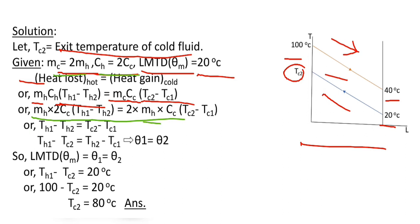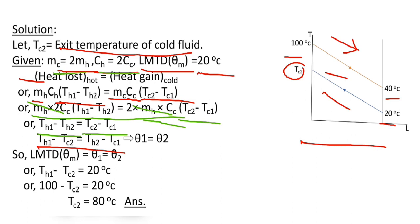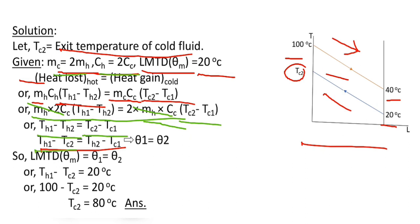Here, 2·m_hot × Cp_cold is common on both sides, so it cancels out. From this we get that the temperature difference of the hot fluid equals the temperature difference of the cold fluid. Rearranging, this can be written as: (T_H1 − T_C2) = (T_H2 − T_C1). This is the temperature difference at one end and at the other end of the heat exchanger.